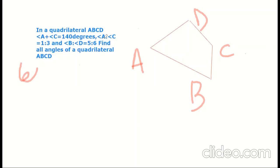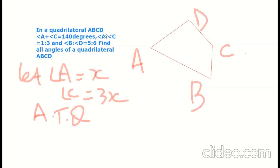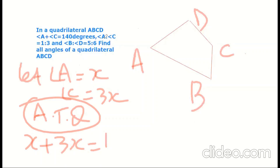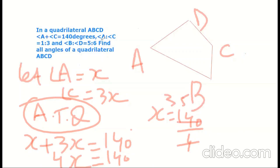We will let angle A equal to X and angle C equal to 3X. According to the question, X plus 3X is equal to 140 degrees. That means 4X is equal to 140 degrees, so X is equal to 140 divided by 4, which is 35 degrees.